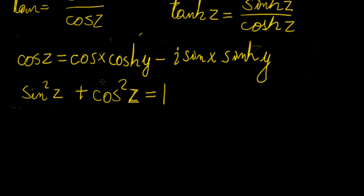As a practice problem, I recommend you try to show that sin²(z) + cos²(z) = 1 holds using the definitions of sine and cosine we just used. You will need to expand the expressions and demonstrate this identity.